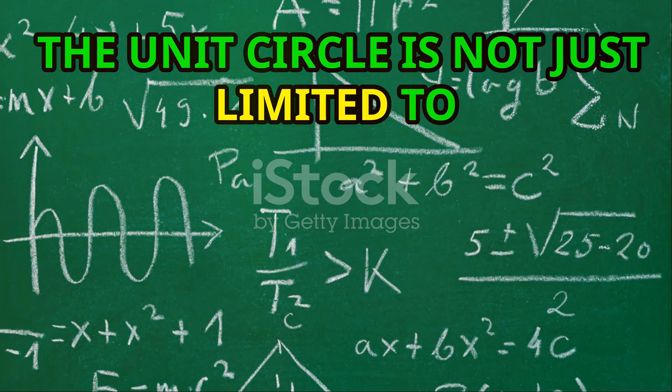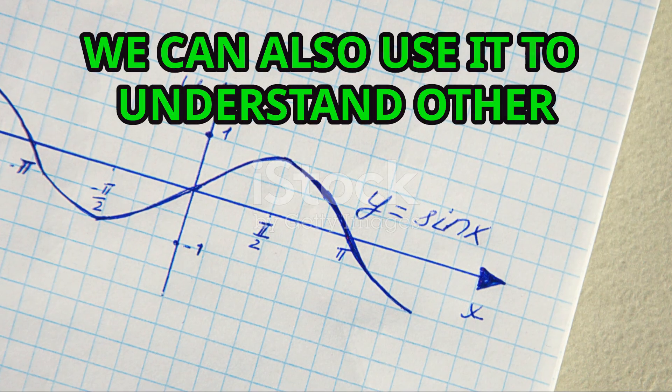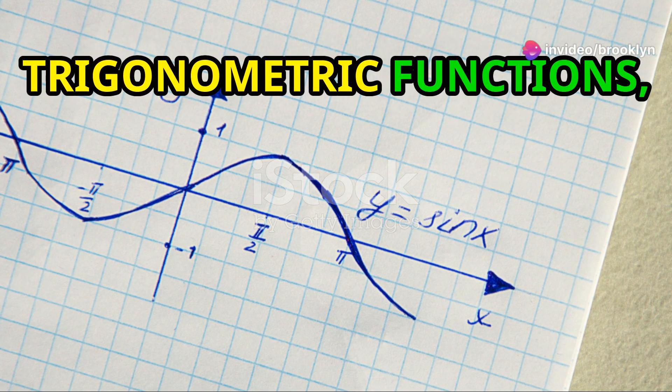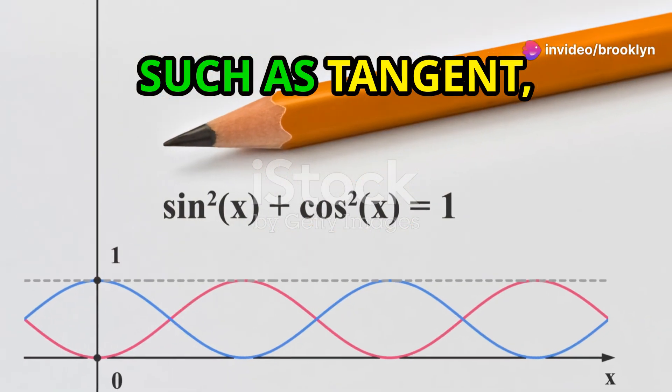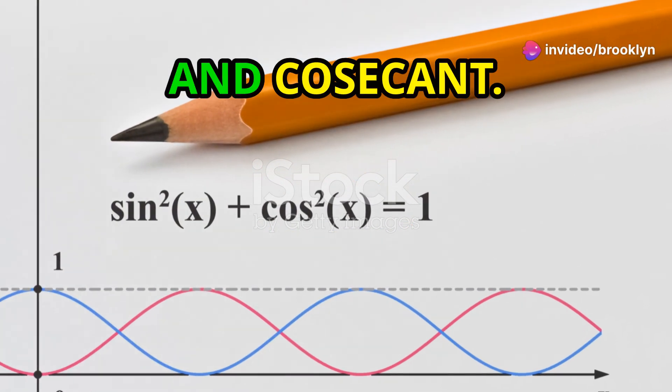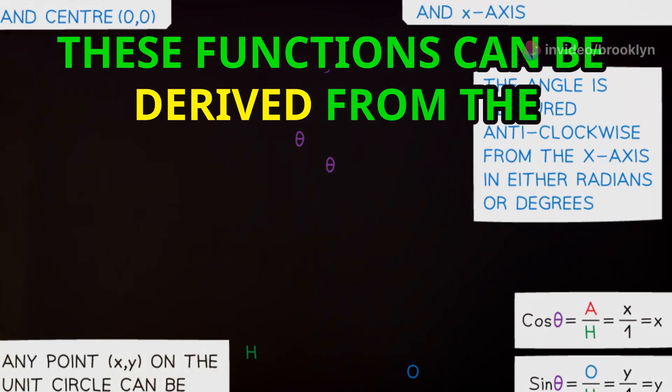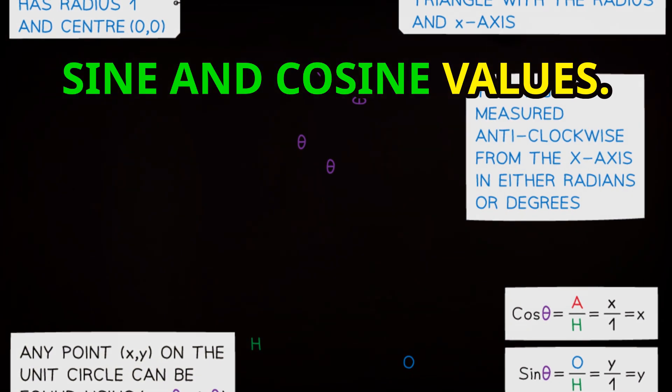The unit circle is not just limited to sine and cosine. We can also use it to understand other trigonometric functions, such as tangent, cotangent, secant, and cosecant.